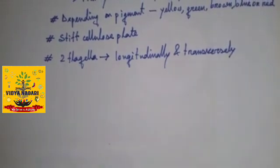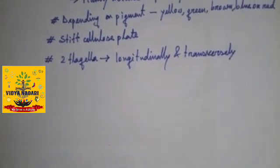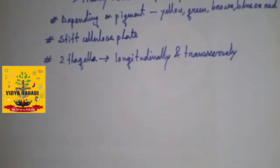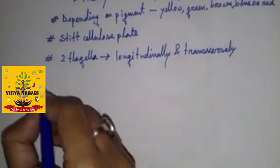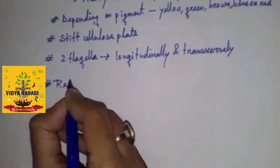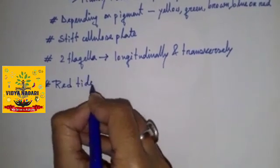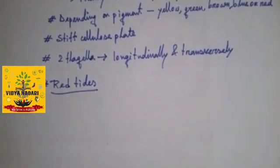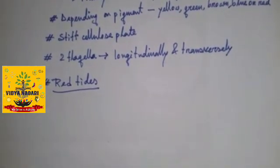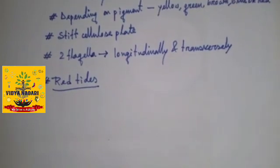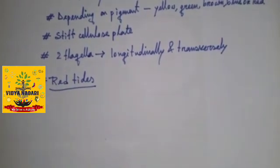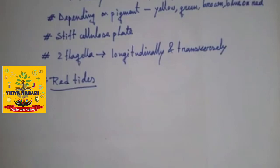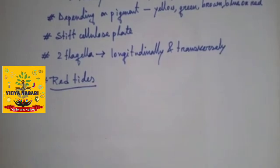Very often red dinoflagellates e.g. Gonyaulax undergoes such rapid multiplication that they make the sea appear as red. This is known as red tides. Red tides is nothing but rapid multiplication of dinoflagellates like Gonyaulax. Toxin released by such large numbers may even kill other marine animals like fishes.